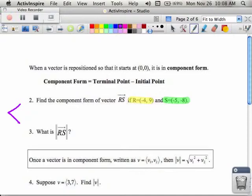So I take the X value, negative 5, and I subtract off the R's X value, which is negative 4, and that will be my new X value. Then I do the same for the Y values. I take my second Y value, negative 8, and subtract off my first Y value, which was 9. And what that means when I simplify it is that I get negative 1, comma, negative 17.